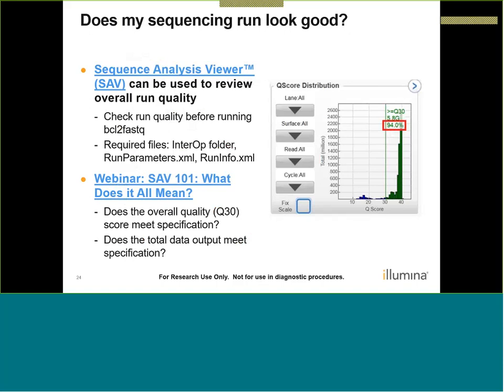Before moving on, the input for BCL to FASTQ is the sequencing run itself, so we recommend ensuring that the sequencing data looks as expected. A high-quality sequencing run will more than likely generate high-quality FASTQs. There are two resources to help evaluate your run: the first is Sequence Analysis Viewer (SAV), where you can view general run metrics such as Q30 scores or cluster density. We have a great webinar, SAV 101: What Does It All Mean?, which goes into further detail about evaluating SAV data.